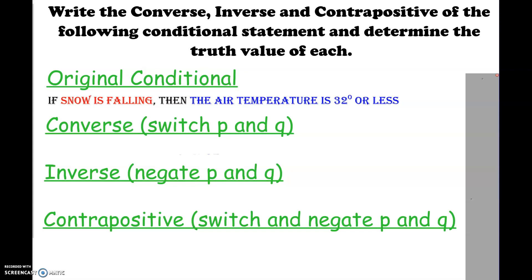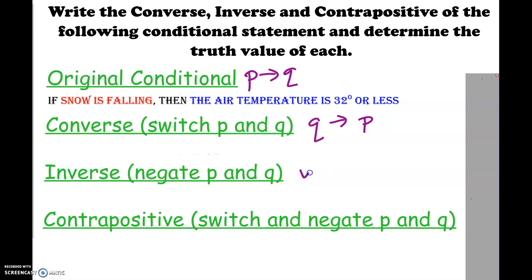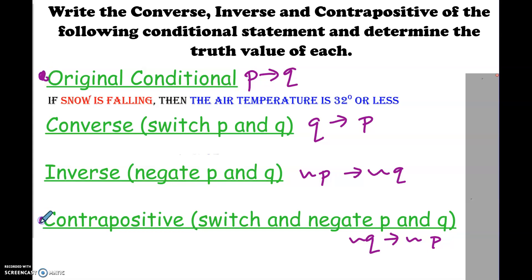Welcome to take two of lesson 2-1, which is conditional statements. We've been doing P implies Q, which is the original. The converse is Q implies P. The inverse is not P implies not Q. And the contrapositive is not Q implies not P. The original and the contrapositive have the same truth values, and the converse and inverse have the same truth values.